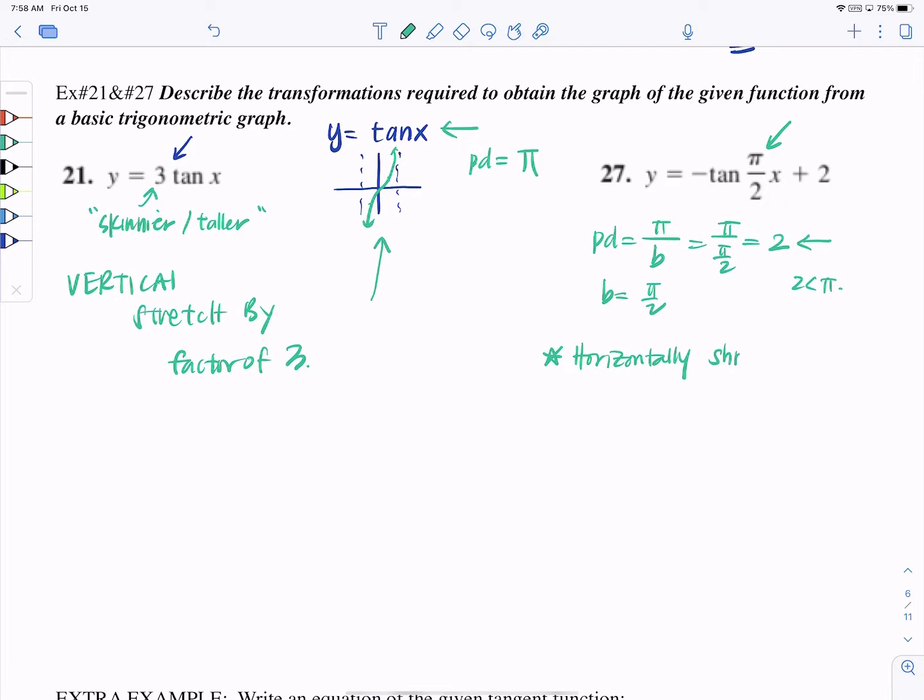So did you say something like this? Horizontally, because each cycle became shorter. Horizontally shrink by—but remember we talked about horizontal, it's always the reciprocal that we talk about.